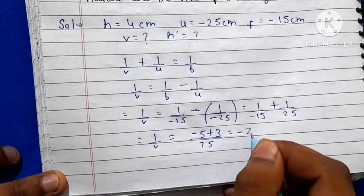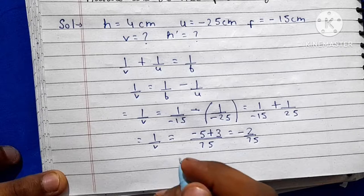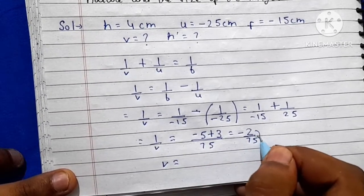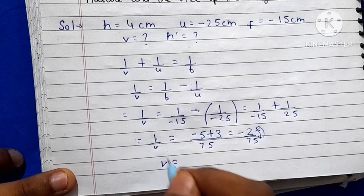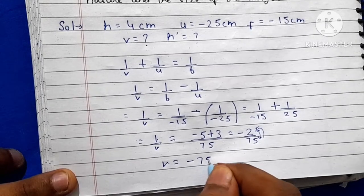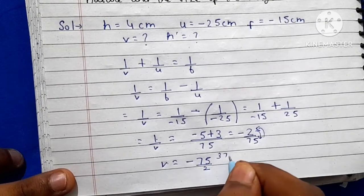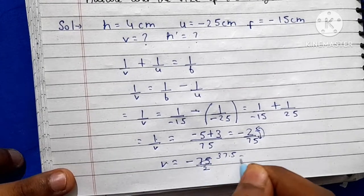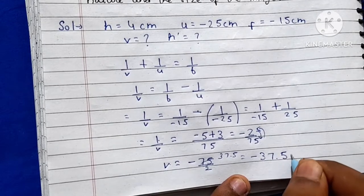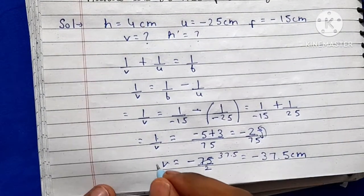This is our 1/v value, so we will reciprocate. v = 75/(-2) or -75/2, which is -37.5 cm. So our v we have found out, which is our image distance.